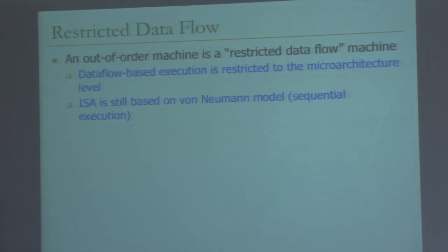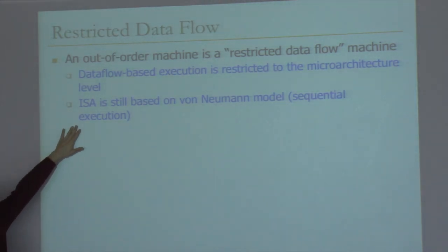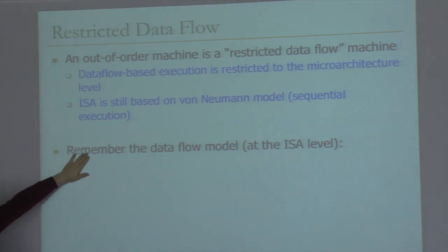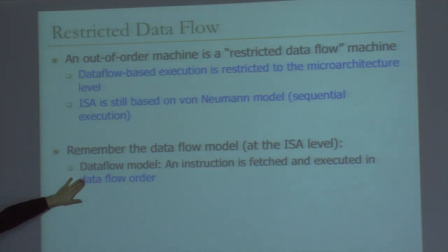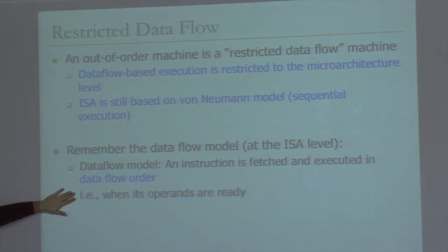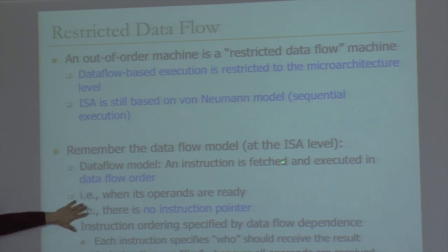This is called restricted data flow, because this is a data flow graph that exists in the machine at this point in time — it doesn't form the entire data flow graph of the program. Data flow-based execution is restricted to the microarchitecture level; the ISA is still based on the von Neumann model. In a true data flow model, instructions are fetched and executed in data flow order. Here, we're dispatching in data flow order but fetching in program order — that's the major difference.